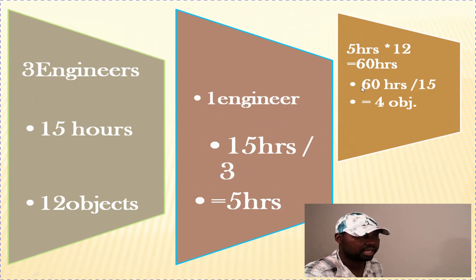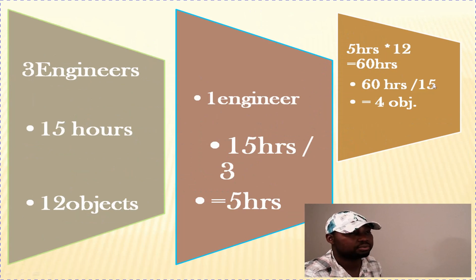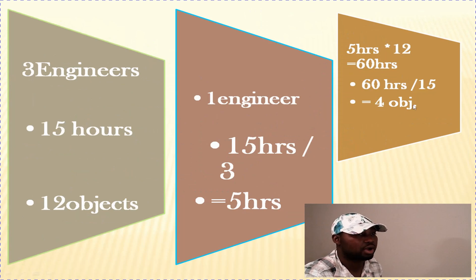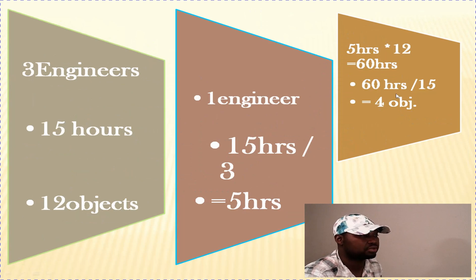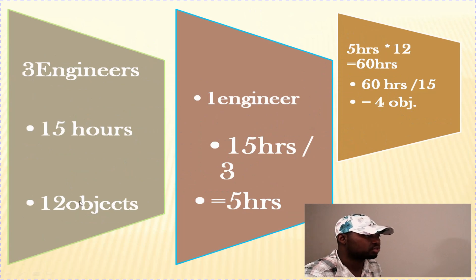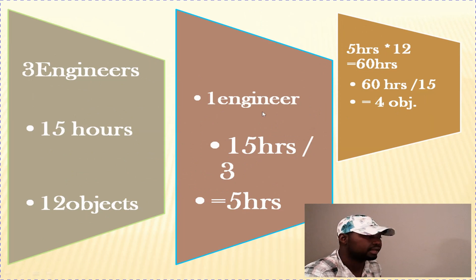But if he wants to work for only 15 hours, he will only be able to produce four objects. If we go back and check, it makes sense: 12 objects divided by 3 engineers equals 4. So that's another way to look at it.